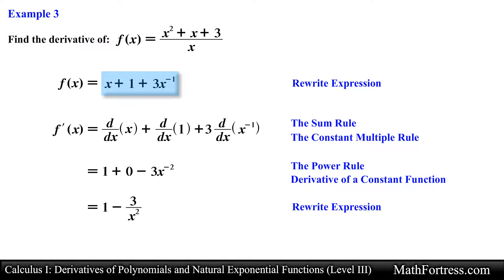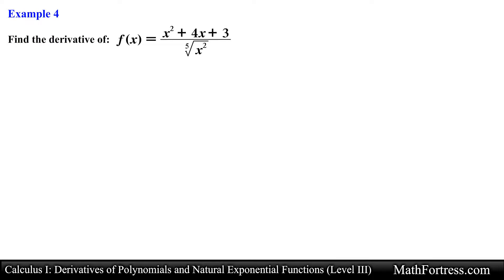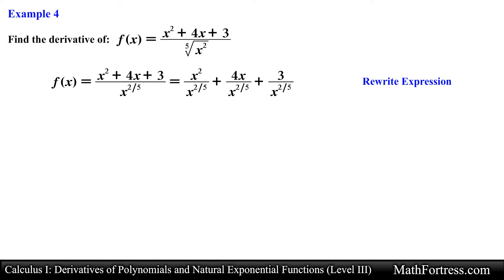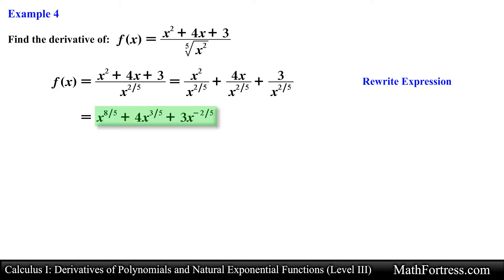Once again, always try to rewrite the function into a derivative friendly form. Find the derivative of f of x equals the quantity x squared plus 4x plus 3, all over the fifth root of x squared. This function is similar to the last example — the only difference is that now we have a radical expression in the denominator. Just like the previous example, we need to distribute this radical expression to all the terms in the numerator. Before we do that, let's rewrite the radical expression using fractional powers. Next, we divide each term in the numerator by this expression, subtracting exponents, and simplifying each term to obtain the derivative friendly form.